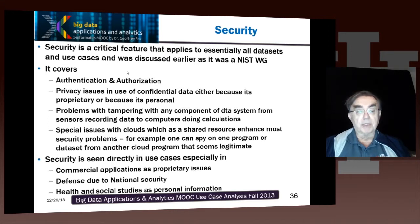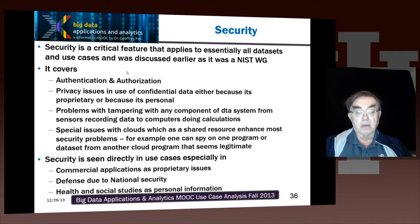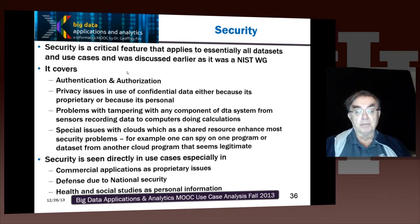In the end, this points out that three broad areas — commercial applications, proprietary defense and national security issues, and health and social studies including network science — all have privacy issues arising from the use of personal or proprietary information.